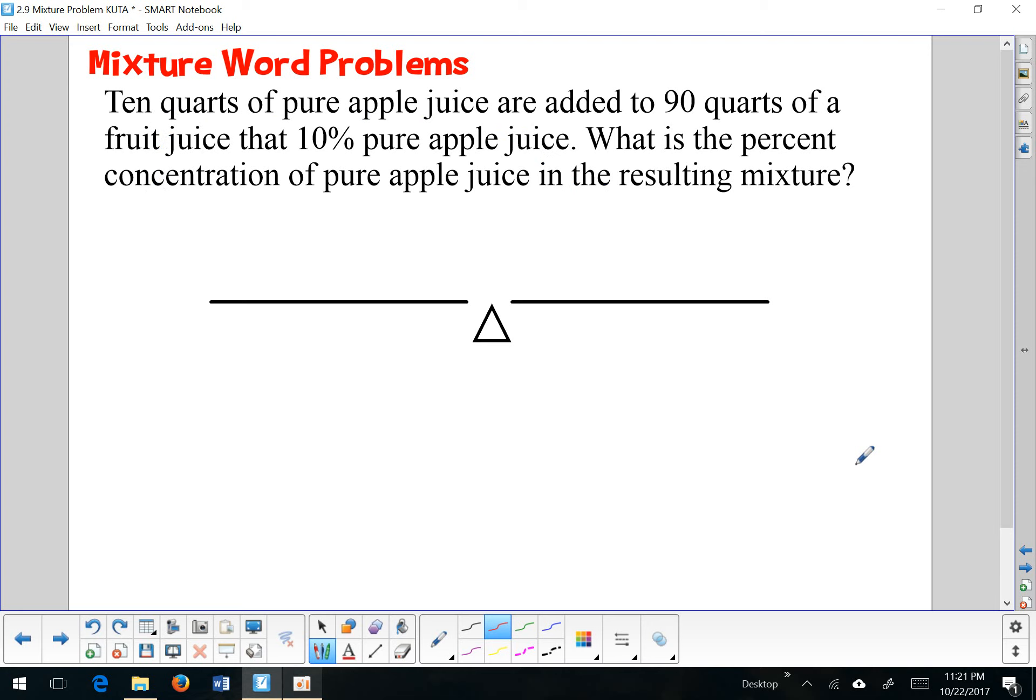10 quarts of pure apple juice. So pure apple juice is 100% apple juice. So I know that's got to be my higher percentage, right? 10 quarts. So there's 10 quarts. 10 quarts of pure apple juice is added to 90 quarts. So that's a quantity. 90 quarts of a fruit juice that is 10% apple juice. What is the percent concentration of apple juice in the resulting mixture? Oh, the mixture's here. And they're asking me, what is that? So that is our unknown.